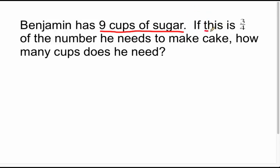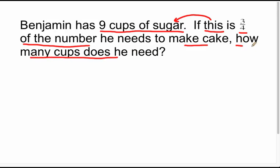So it says 'if this' — now 'this' is a pronoun that refers to something that was just mentioned, so it's referring to the nine cups of sugar. So this sentence really reads: if nine cups of sugar is three-fourths of the number of cups of sugar that he needs to make the cake, how many cups of sugar does he need? So I am trying to figure out the number of cups that he needs. Let me just answer this question with a blank for what the answer is going to be.